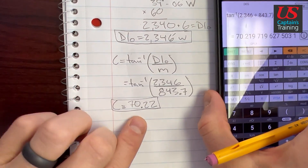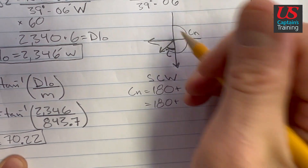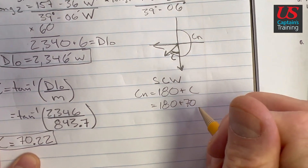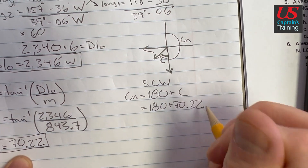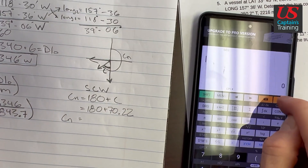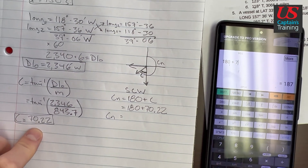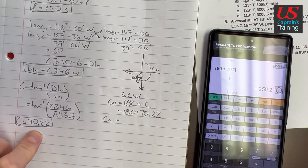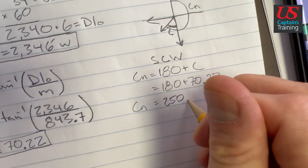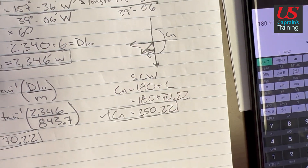Now we can find CN because we have C. CN is 180 plus C, which is 180 plus 70.22. So CN equals 250.22 degrees. That's our course from north, and this should match one of the answer choices.